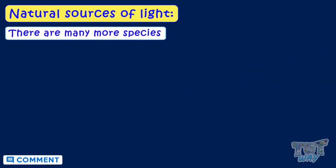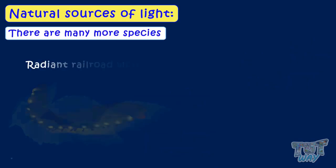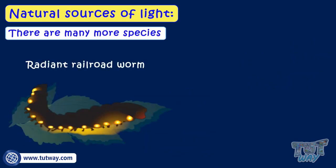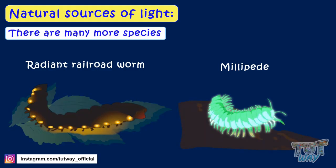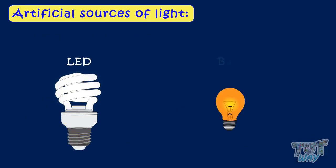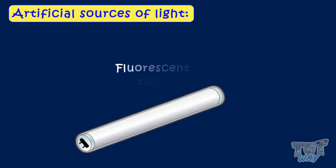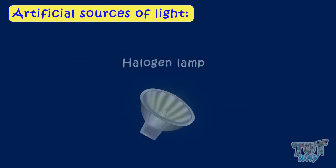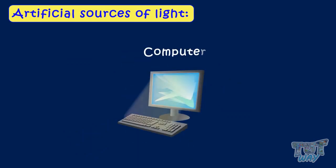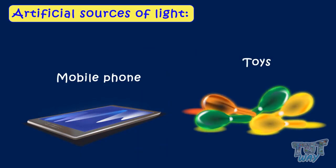And there are many more species like radiant railroad worms and glowing millipedes. Now let's see some artificial sources of light. Light from sources like LED bulbs, fluorescent tubes, incandescent bulbs, halogen lamps, LED lights, computers, phones, and toys are all artificial sources of light.